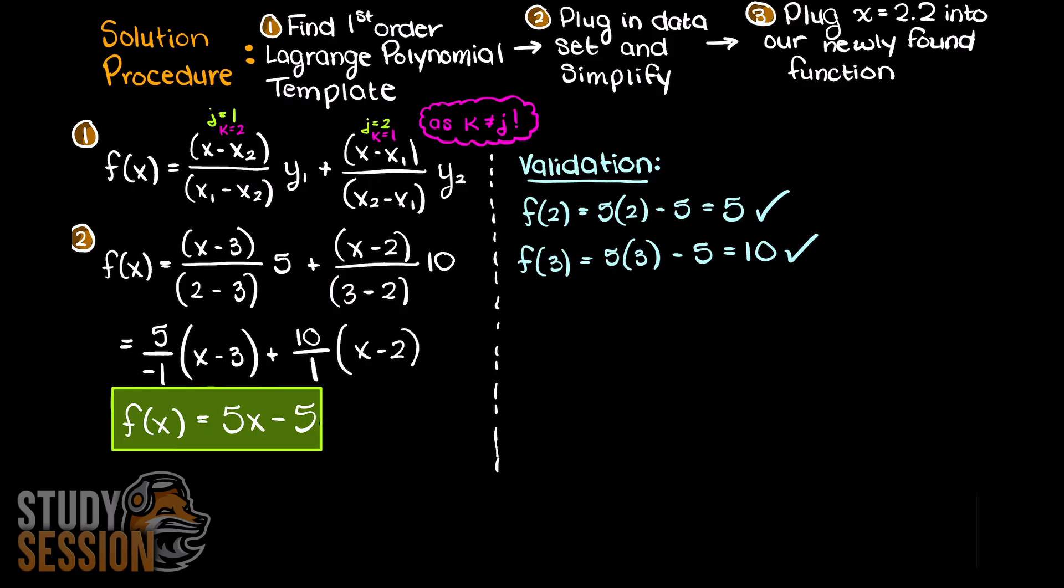Lastly, we just need to plug in the input of 2.2 into our function. This gives us an output of 6, which is the solution to the question that we were initially asked.